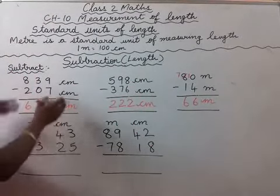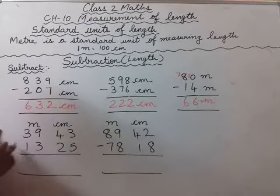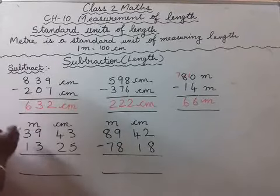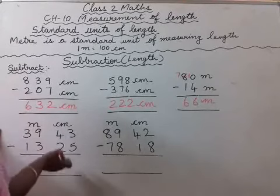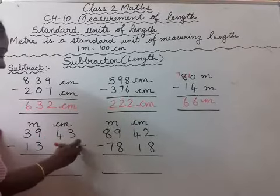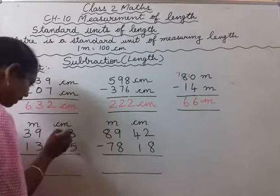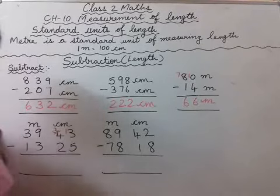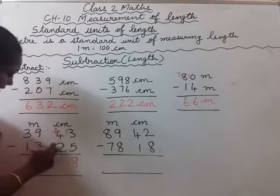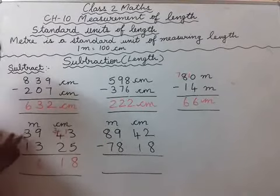Next, meter and centimeter are written separately. How are you going to solve it? 39 meter 43 centimeter minus 13 meter 25 centimeter. We are going to subtract this using the borrowing method, because the smaller number is on top and the larger number is below. So 3 minus 5 — how can we do that? We cannot subtract. So you are going to borrow from the next place. This will become 13 and this will become 3. So 13 minus 5 will be 8, then 3 minus 2 is 1, 9 minus 3 is 6, and 3 minus 1 is 2.